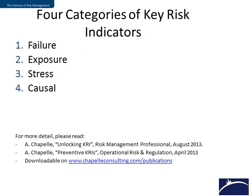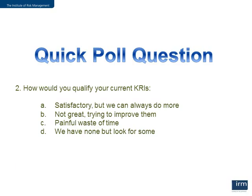About key risk indicators, I'd like to suggest four categories: failure, exposure, stress, and causal. These are detailed in two papers referenced below, one published by the Institute of Risk Management, which you can download freely. Before moving on, I'd like to assess your level of satisfaction with regard to your key risk indicators.